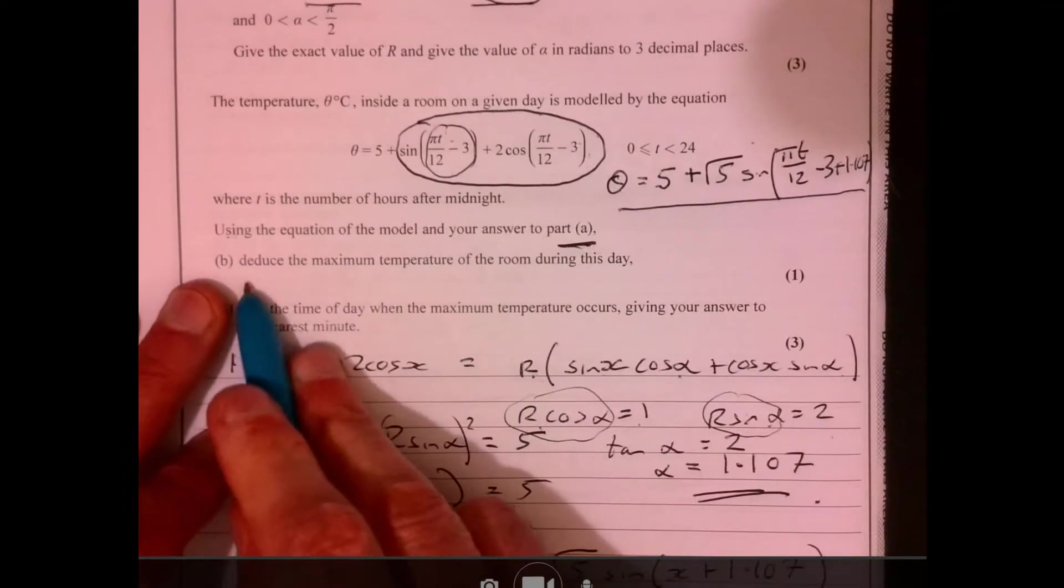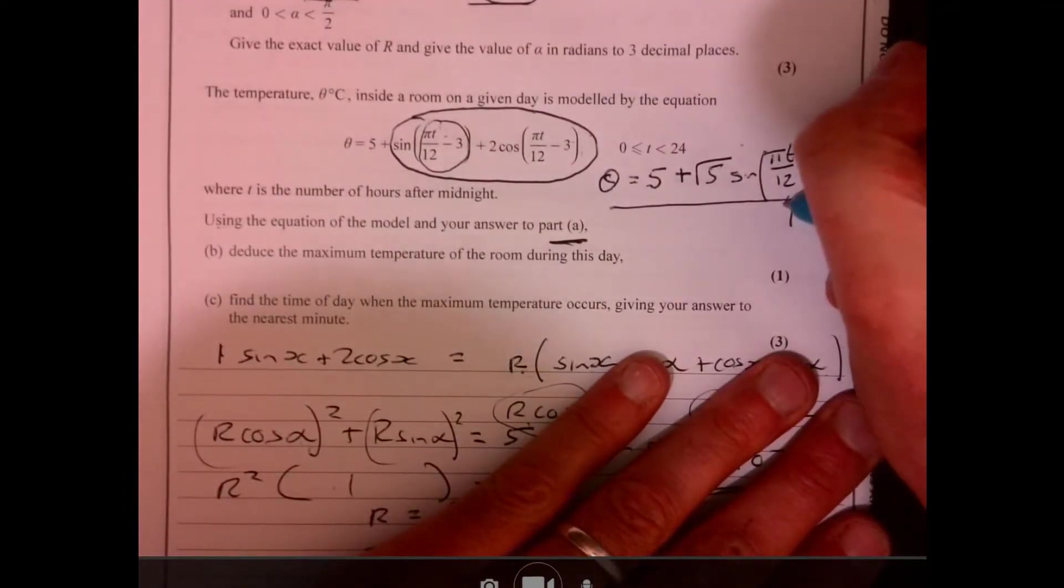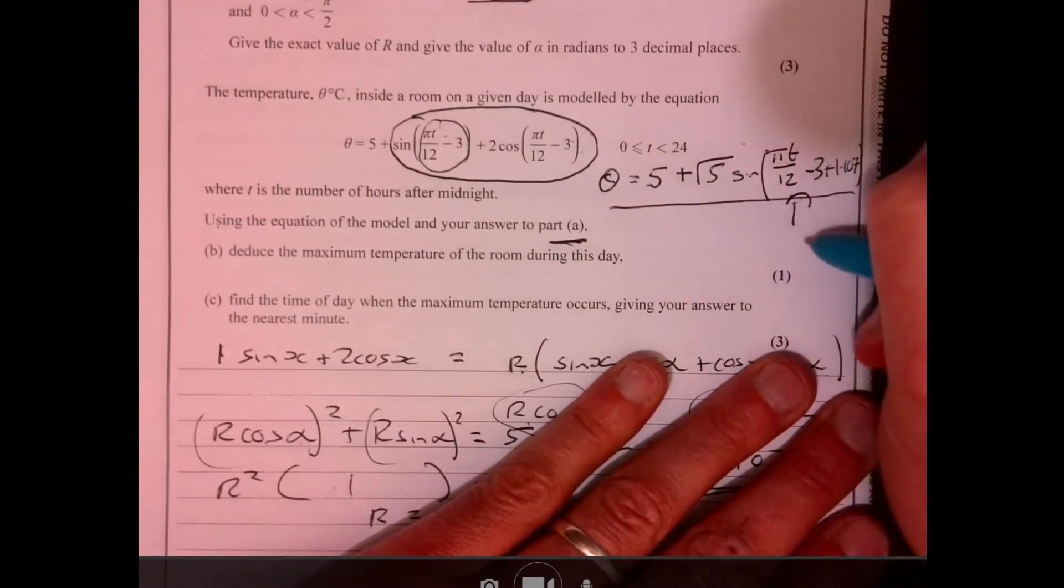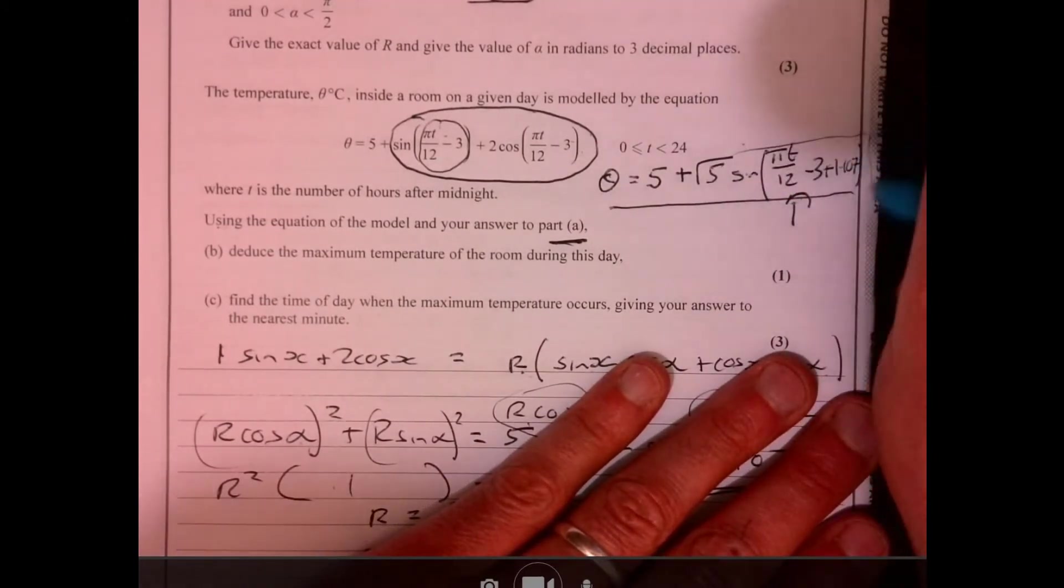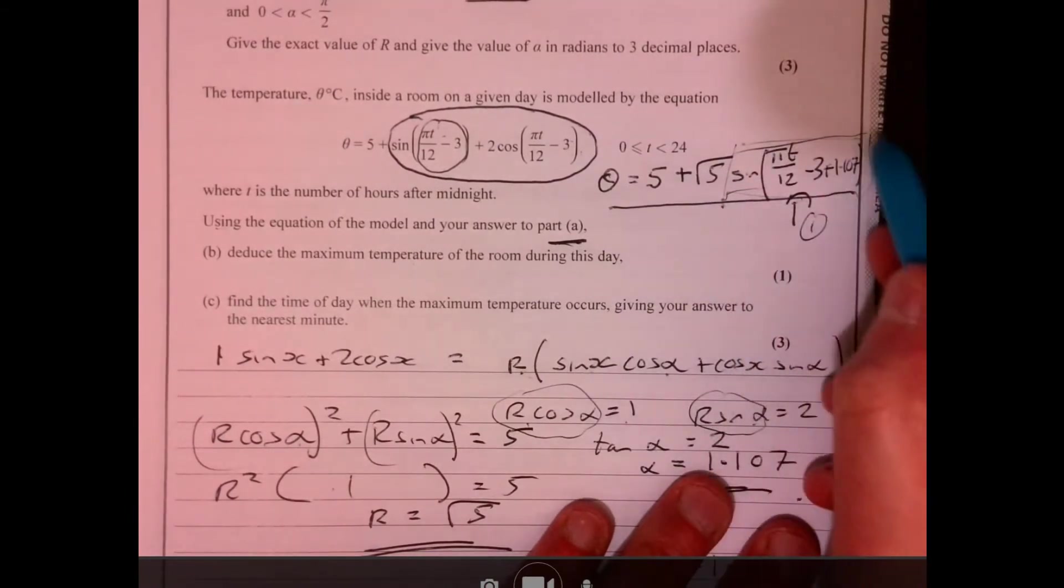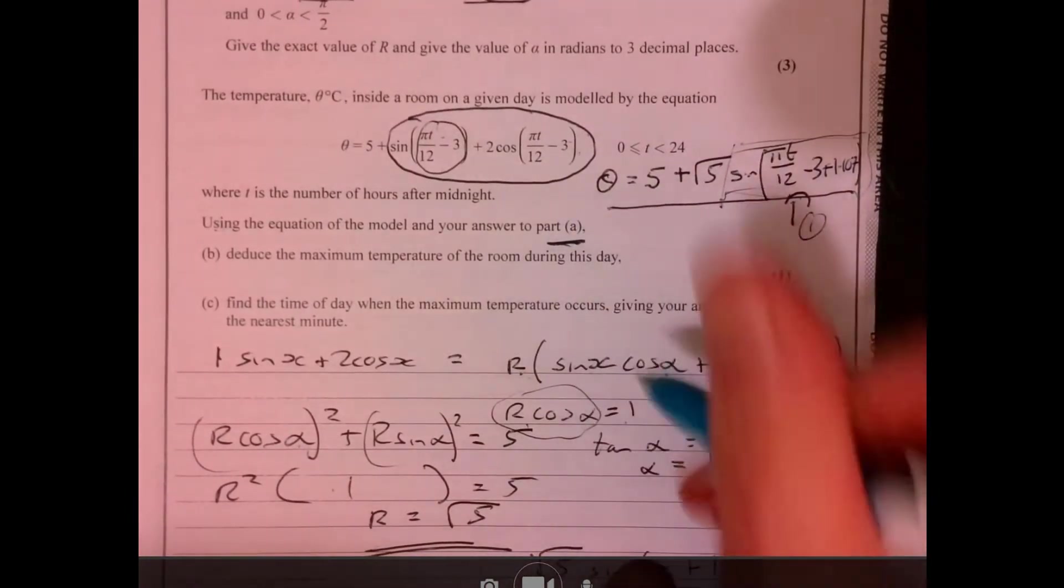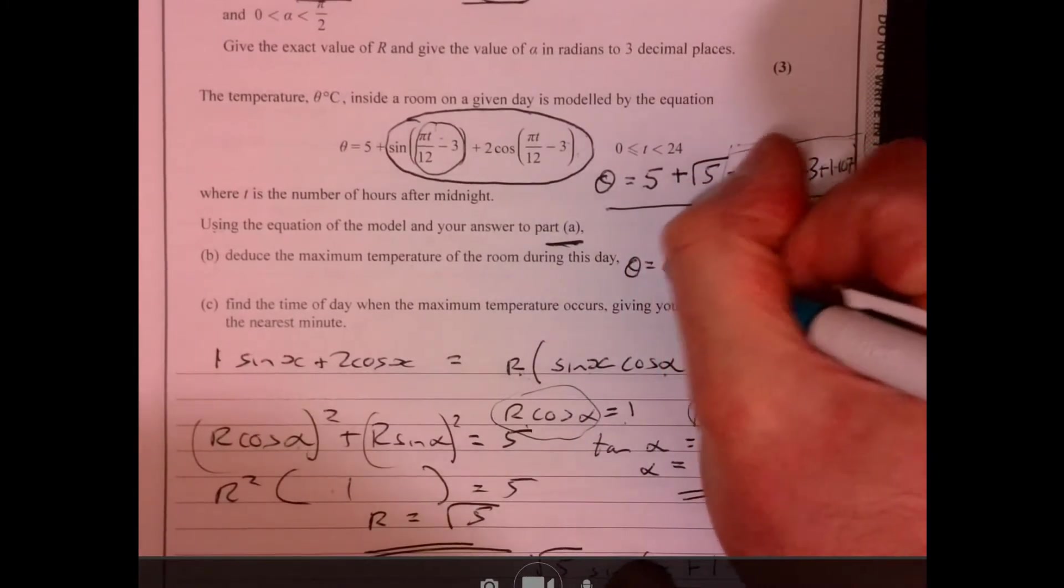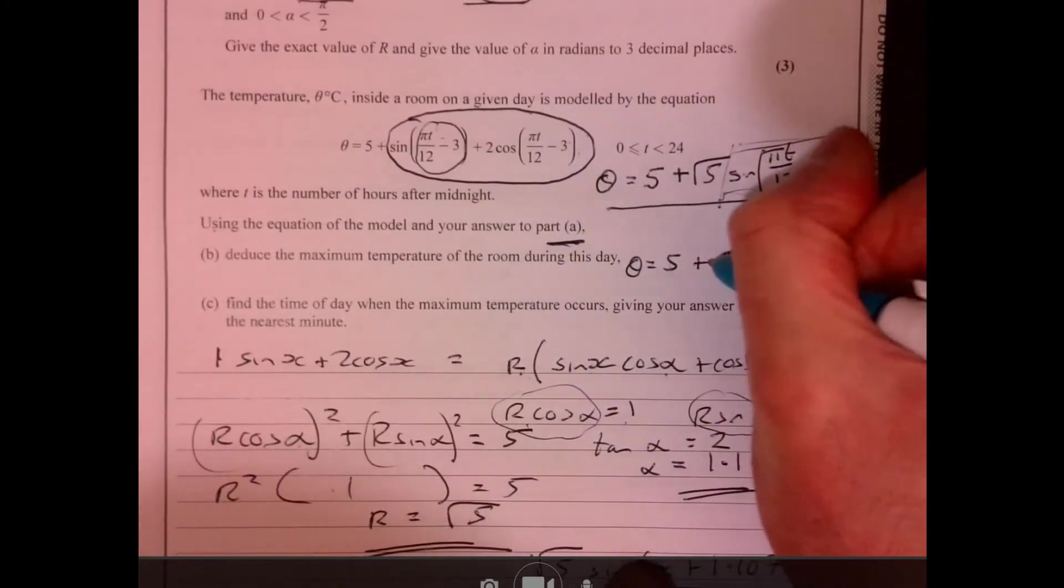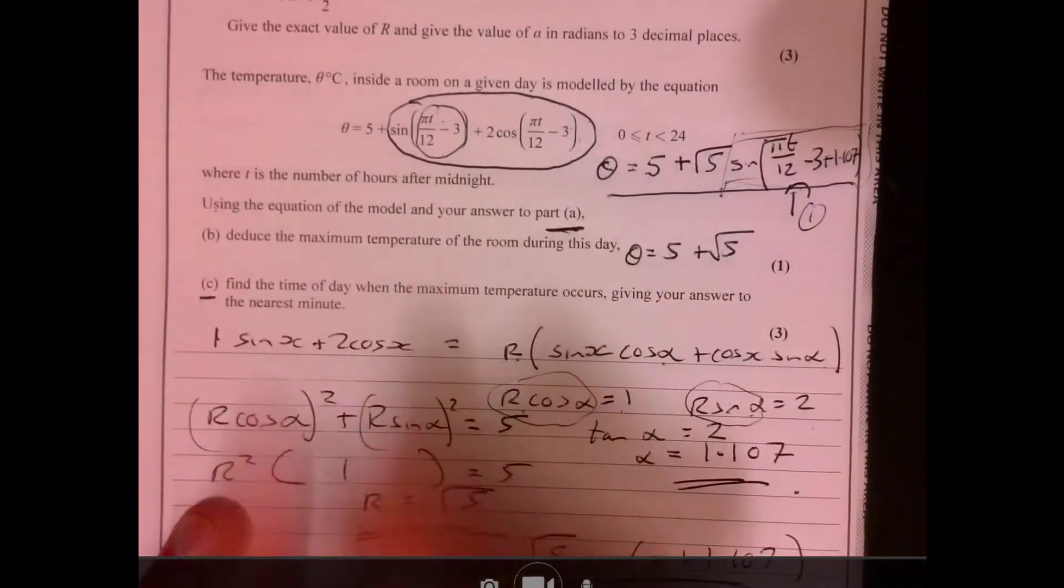The first part of the question says deduce the maximum temperature. So the maximum temperature is when this bit here, sine of something, when is sine the biggest? The biggest it can be is one. So when's that one? Five plus root five. So the biggest temperature would be five add root five because it's when this thing is one.